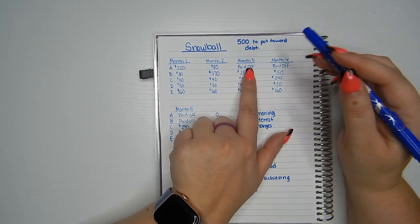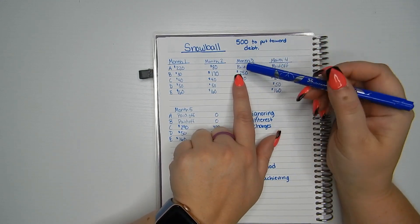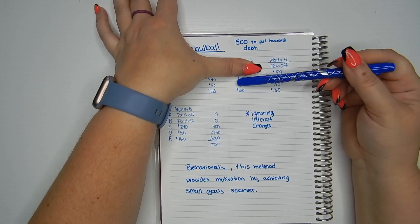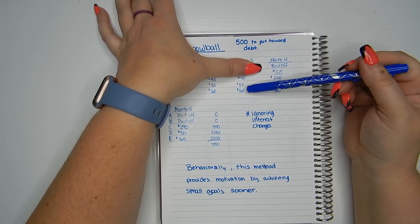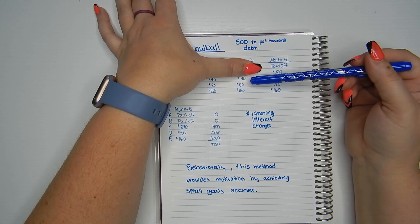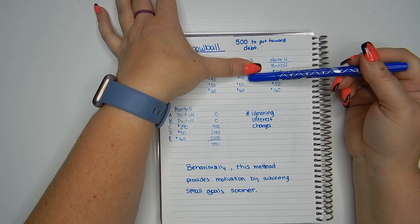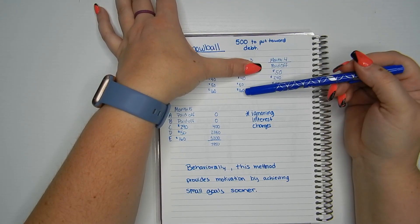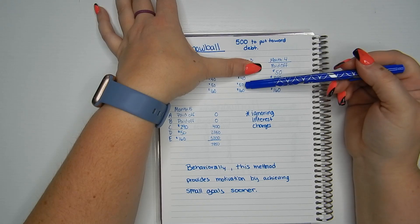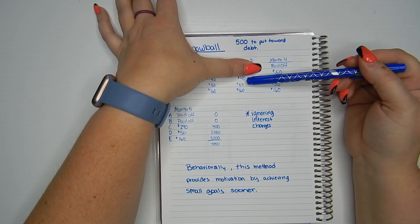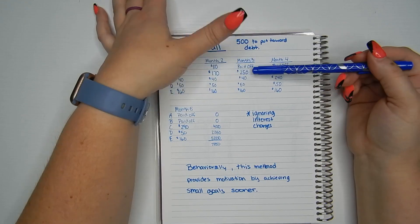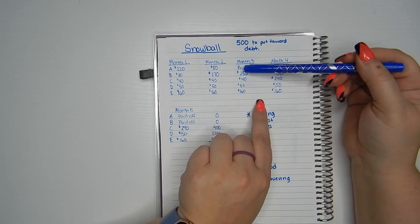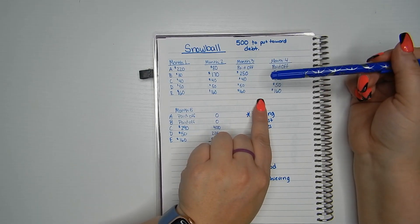Look at month three. Card A is paid off. I don't have to worry about that one at all anymore. It's gone. So now I'm going to do the same thing. I'm focusing on card B. So I'm going to look at my minimum balances for my other three cards. $160 towards E, $50 towards D, $40. And I still have $500 towards debt that I can use. So I'm going to put $250 towards card B because that totals up my $500.